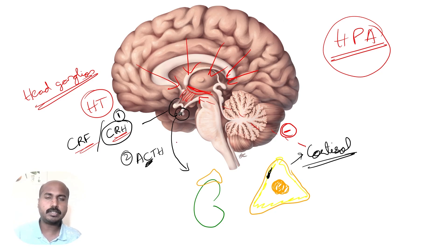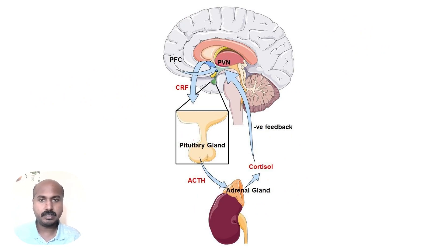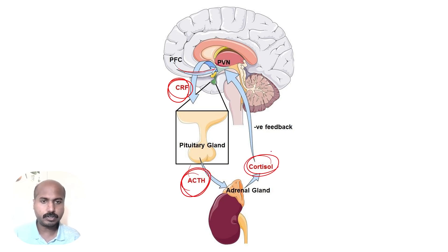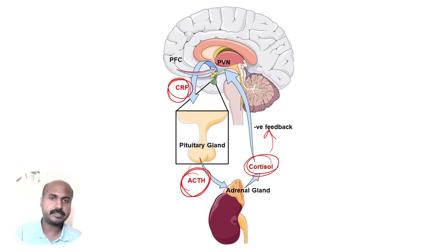This is a very important neuroendocrine loop in our body called the HPA axis. To summarize: the prefrontal cortex sends impulses to the hypothalamus, which secretes CRF to act on the anterior pituitary to produce ACTH, which acts on the adrenal gland to produce cortisol, which then causes negative feedback to suppress corticotrophin releasing hormone.